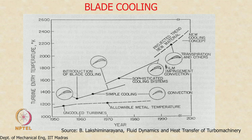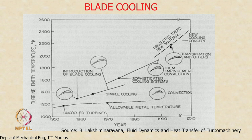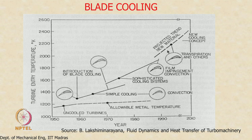The evolution of blade cooling technology shows that uncooled turbine blades can only operate up to about 1200 K allowable metal temperature. With the introduction of blade cooling — progressing from simple cooling to sophisticated cooling, film cooling, convection cooling, and now transpiration cooling — the allowable operating temperature has risen dramatically. Today we are operating at about 1800 K, which is some 400–500 K above the melting point of the blade metal.